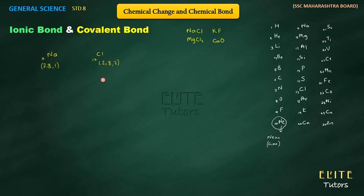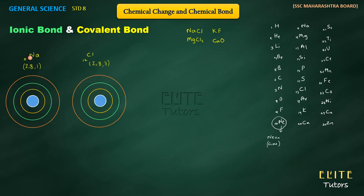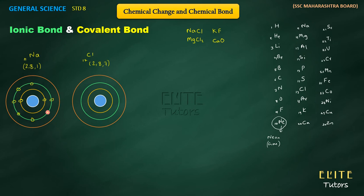If we draw the electron structure of sodium (electronic configuration 2, 8, 1): the nucleus is at the center, K-shell has 2 electrons, second shell has 8 electrons, and the third orbit has 1 electron. This is the electronic structure of sodium.